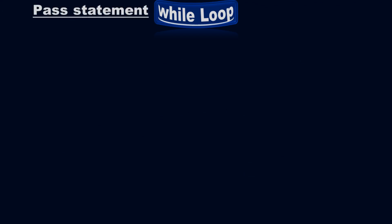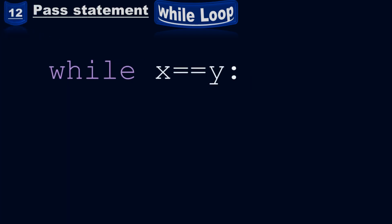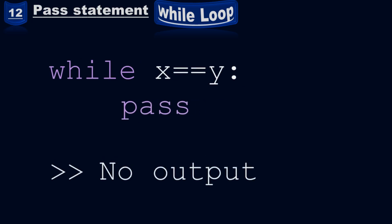What is the pass statement? How can you use the pass statement with a while loop? In example number 12, while x equals y, then pass. When you run it, you will get no output. If I directly put while x equals y and then press Enter and add the pass statement here.